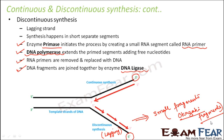To summarize the lagging strand: DNA polymerase cannot directly do the synthesis on the lagging strand because it needs a free 3' hydroxyl end. It gets this 3' hydroxyl end on the leading strand but not on the lagging strand. Therefore it cannot initiate the process on the lagging strand, so it needs enzyme primase. Primase creates a very small RNA fragment which has a free hydroxyl end, allowing DNA polymerase to start adding free nucleotides to that free hydroxyl end.